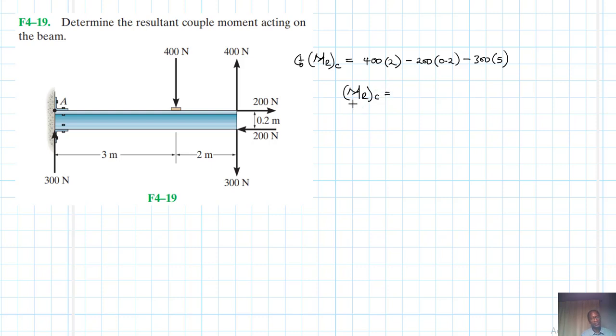400 by 2 minus 200 by 0.2 minus 300 by 5. This gives us minus 714 Newton-meters.